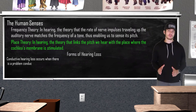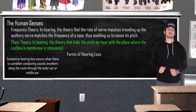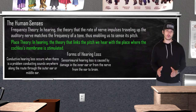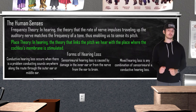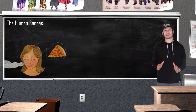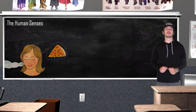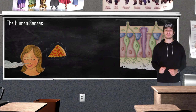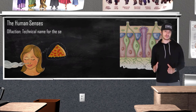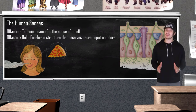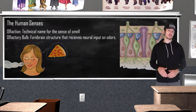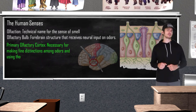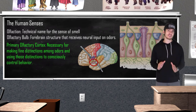Conductive hearing loss occurs when there is a problem conducting sounds anywhere along the route through the outer or middle ear. Sensorineural hearing loss occurs when there is damage to the inner ear or to the nerve from the ear to the brain. Mixed hearing loss is any combination of the two. Smell is a chemical sense — there is not a basic set of sensations for smell as there is for hearing and vision. Instead, there are over 5 million olfactory cells with thousands of different receptor proteins that recognize individual odor molecules, and some odors trigger a combination of receptors. Unlike other senses, your sense of smell bypasses the thalamus and goes directly to the olfactory cortex. Some information is then sent to the hypothalamus, explaining why smell can be associated with memories or emotions, and the rest goes to the primary olfactory cortex where fine distinctions between odors are made.